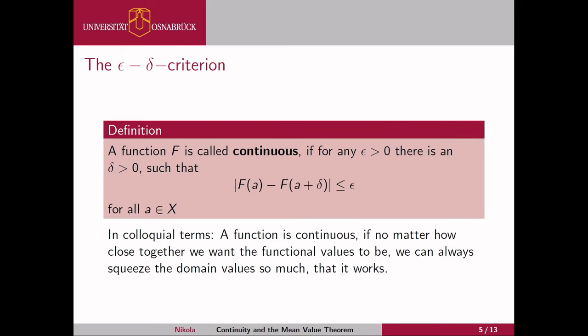Here is the formal definition: the epsilon-delta criterion. We add the Greek letter delta because in a function we have two values that must get arbitrarily small — the difference in the domain and the difference in the image. The definition goes as follows: we call f continuous if for any epsilon greater than zero there is a delta greater than zero such that the functional values between a and a plus delta are closer together than epsilon. The function is called continuous if this is true for all a in X.